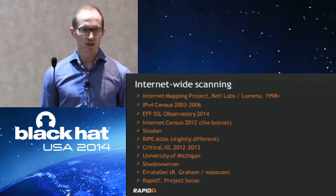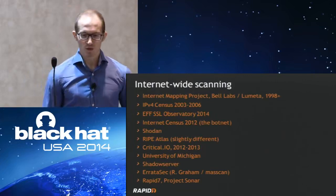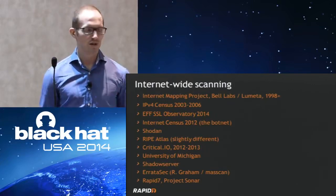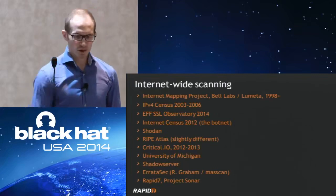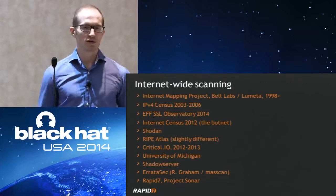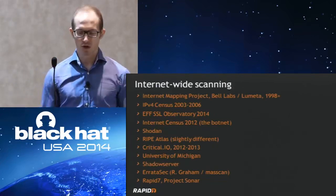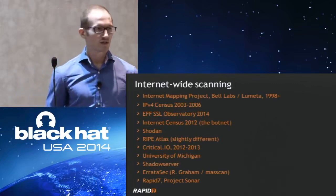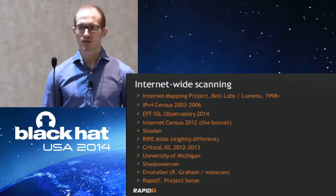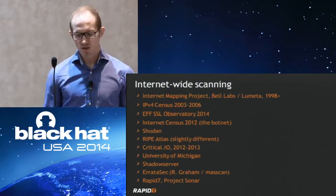Shodan — most of you will know it — is an internet search engine where you search for banners, HTTP headers, and find all systems that expose that particular thing. RIPE Atlas spreads thousands of nodes across the globe and measures round-trip times between them. CriticalIO was actually kind of the predecessor to what we're doing at Rapid7 today. The University of Michigan is a big player nowadays — they released an internet-wide scanning tool, basically the NMAP for internet-wide data gathering, serving a different purpose. Shadow Server publishes research on open recursors and NTP servers vulnerable to the monlist denial-of-service issue.